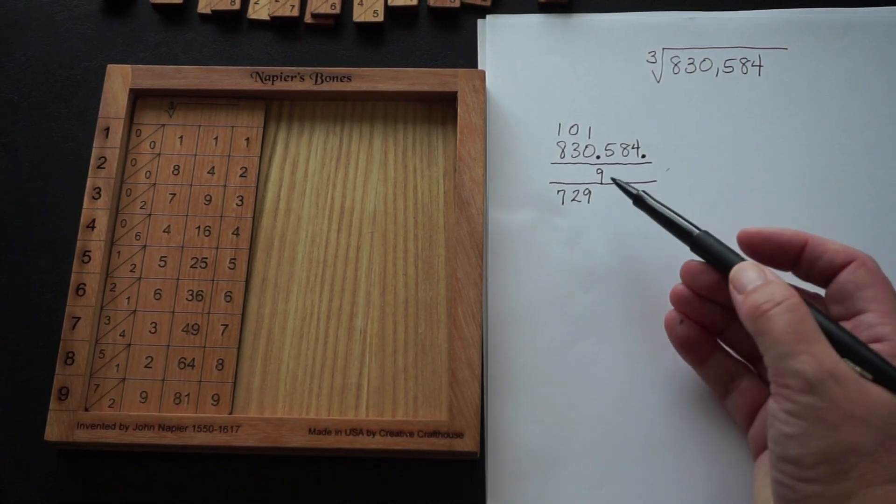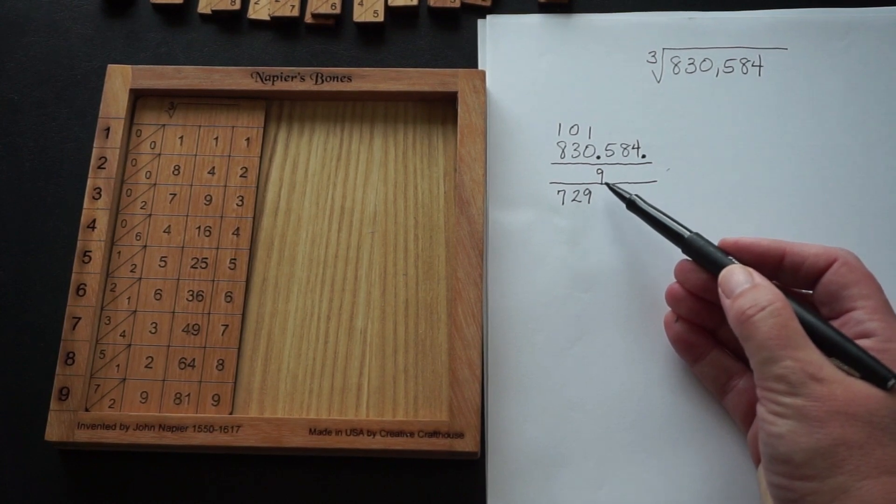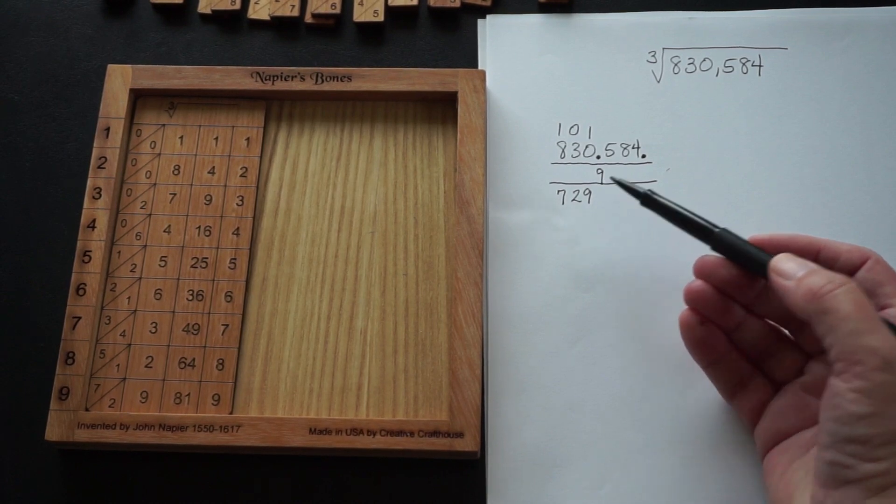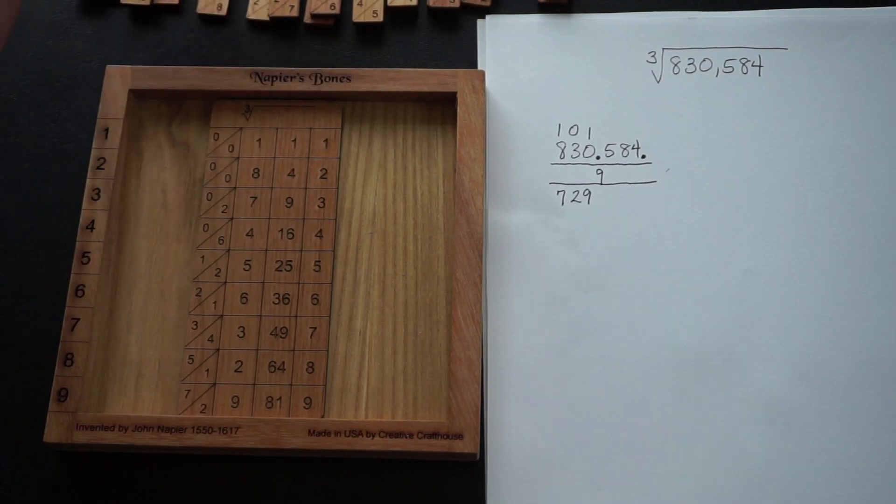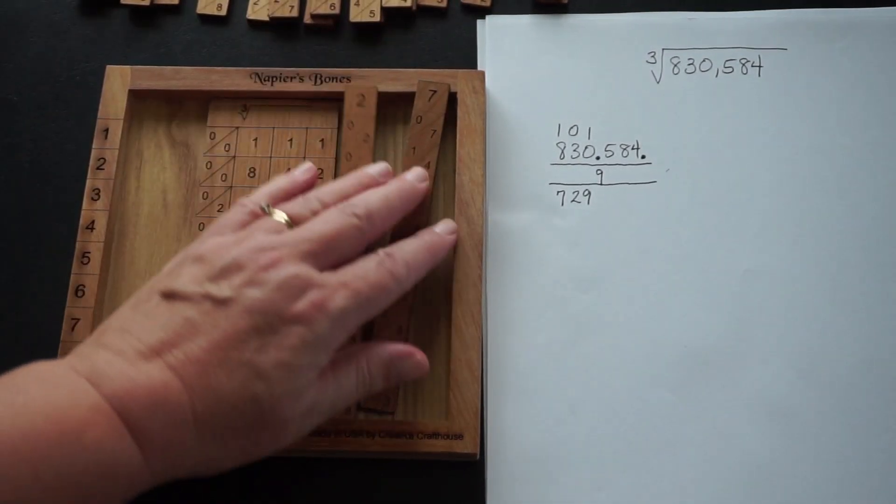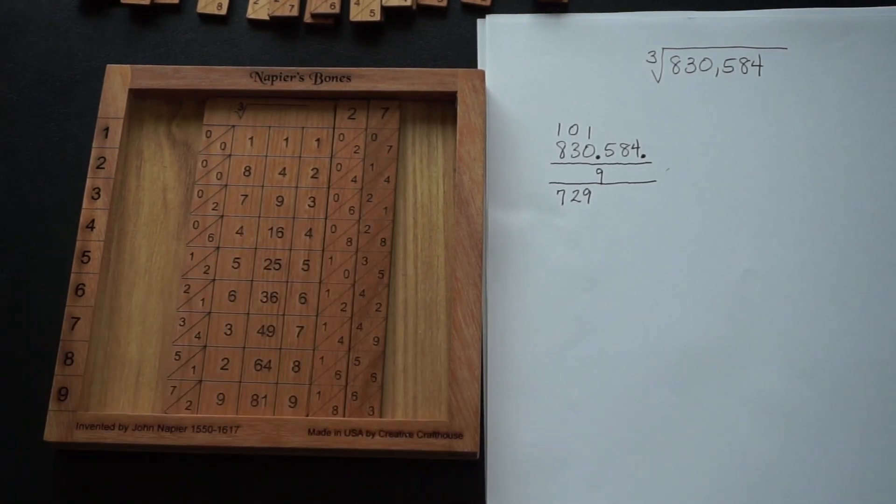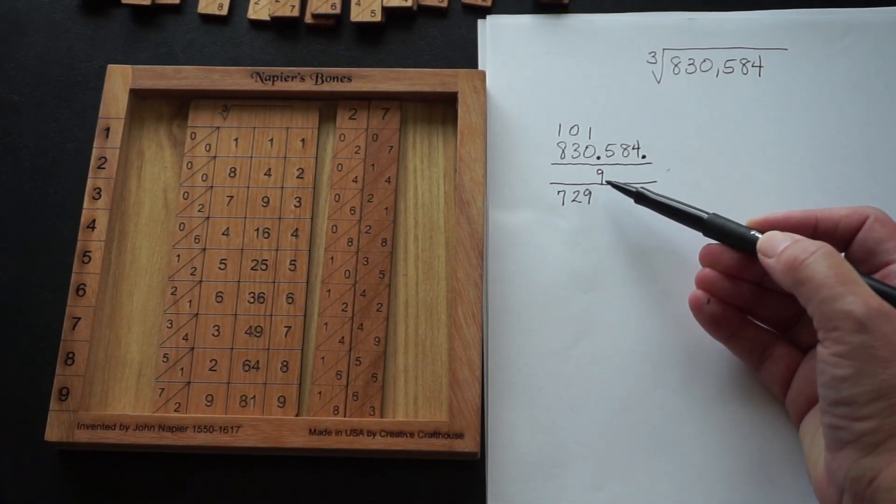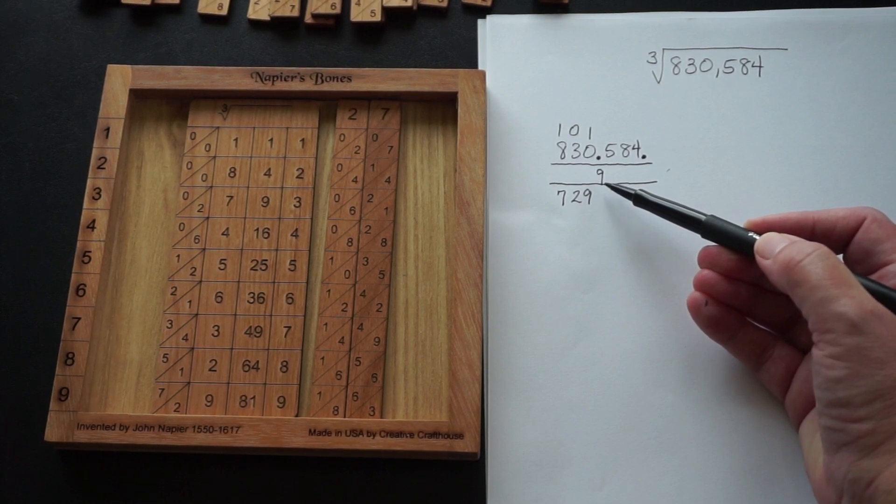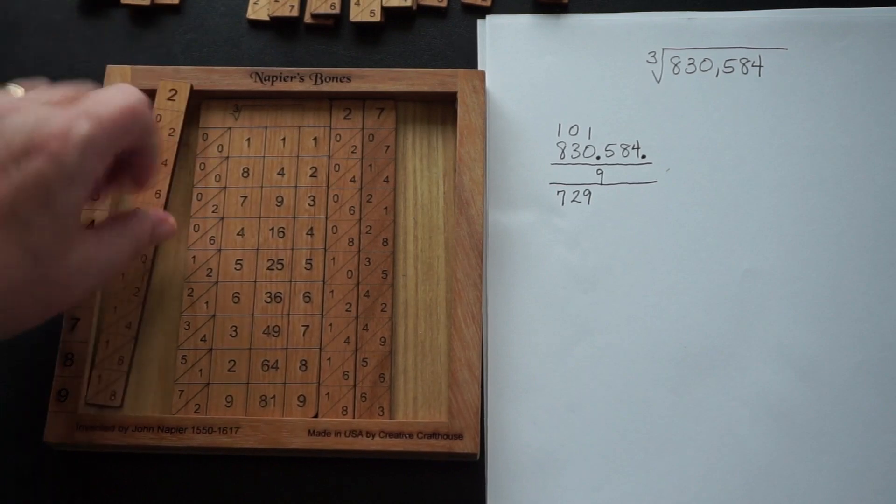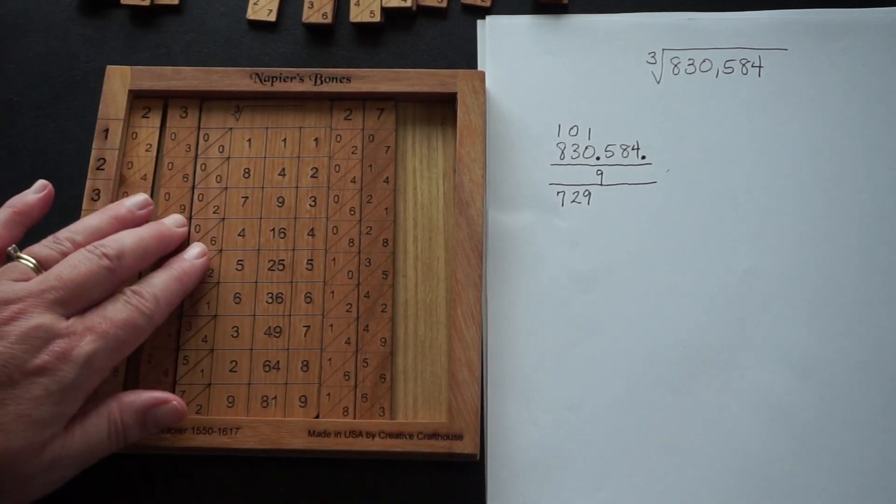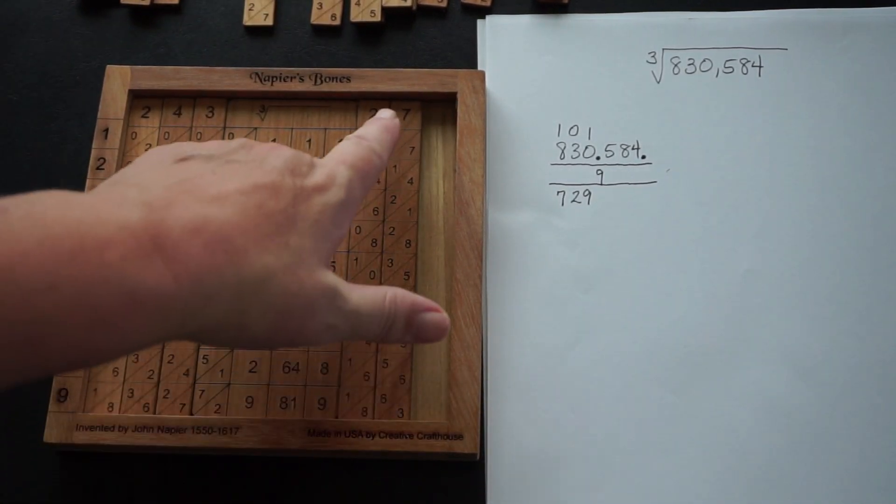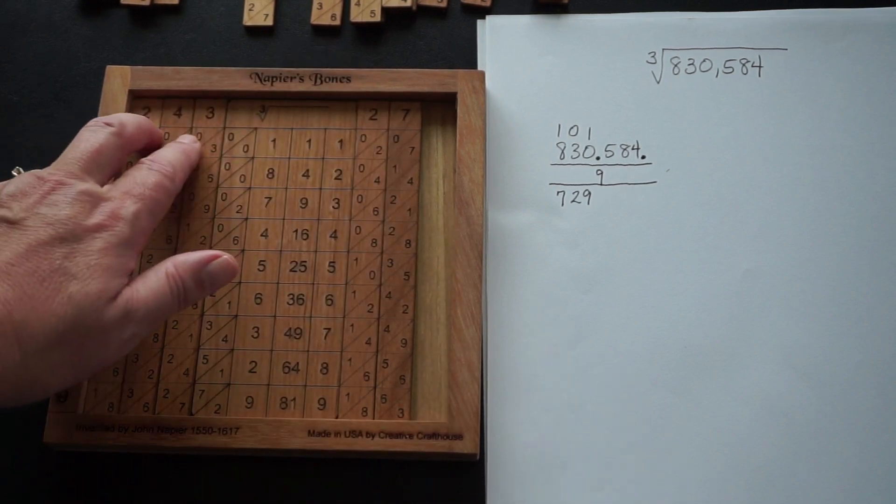Our next step is to look at the 9, or the first result in our answer, which Napier calls the first quatumus. We're going to multiply that by 3, so 9 times 3 is 27. We're going to create a 27 on the right-hand side of our cube root plate. Then we're going to look at the quatumus again and square it. 9 squared is 81. If you multiply that by 3, you get 243. Those go on the left. So this is 9 times 3, and this is 9 squared times 3.